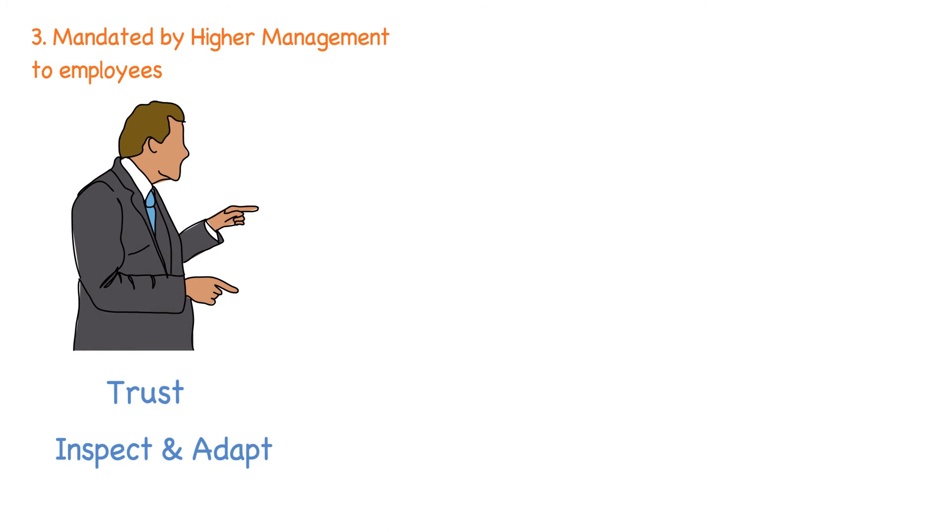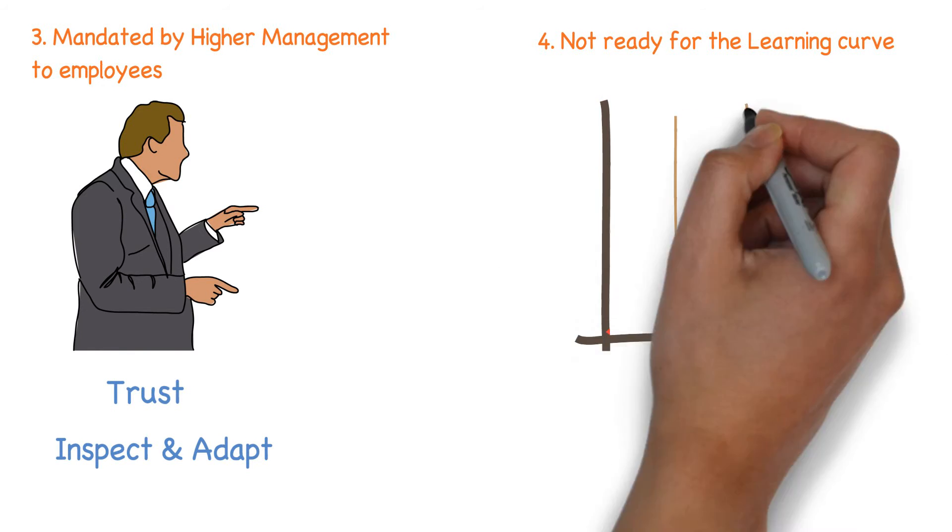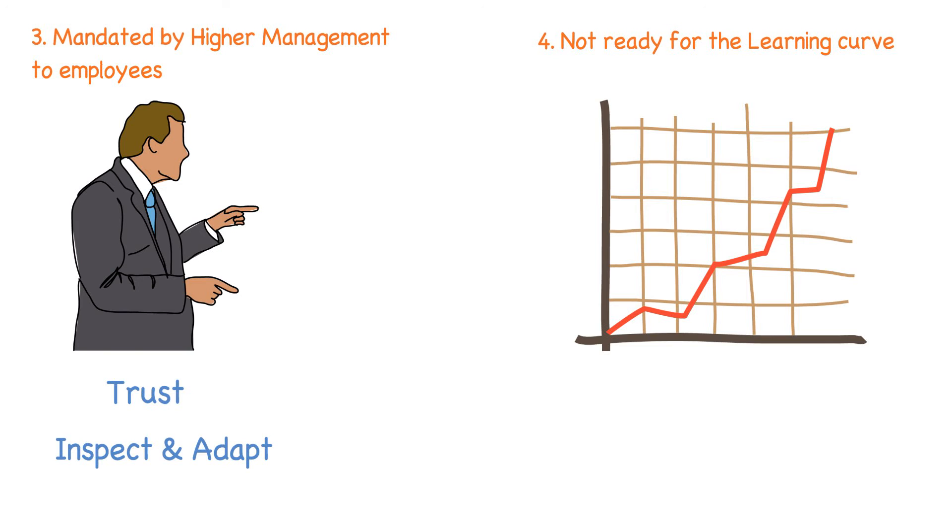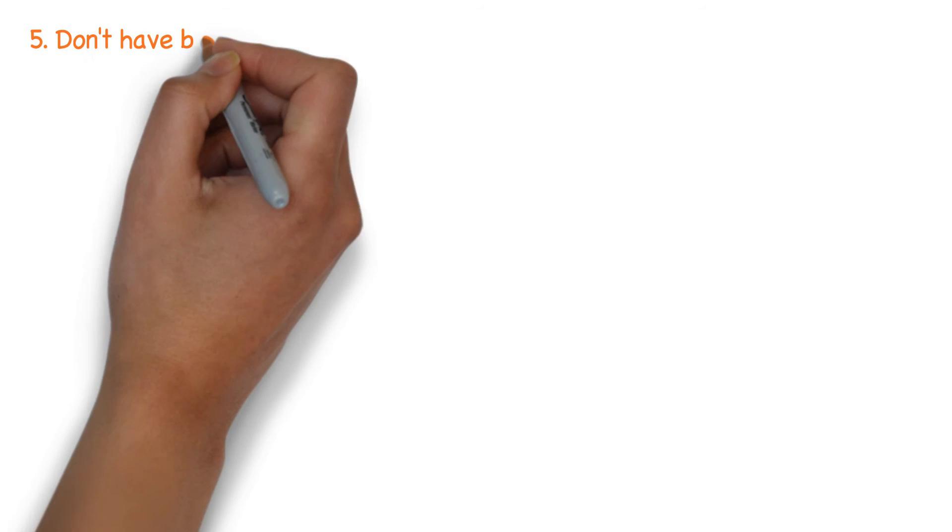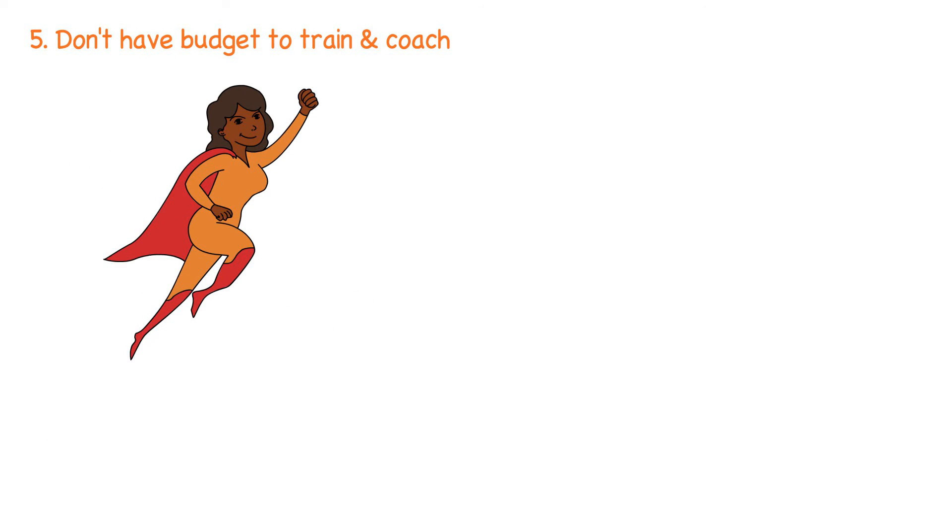When an organization decides to adopt Agile from a traditional development methodology, they choose to transform rather than transition. This has a steep learning curve and they may not be ready to embrace the short-term impact. A need for successful transformation is to have a subject matter expert focusing on ensuring that everyone understands and implements the practices by spirit.